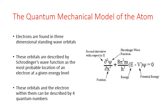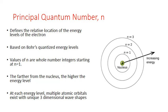They represent the most probable location of an electron at a given energy level. When Schrödinger's equation is solved for any electron in an atom, it allows us to define a set of quantum numbers that describe that electron orbital, or the most probable location of that electron. The first quantum number is known as the principal quantum number, given the variable n. It defines the overall energy level of the electron, based on the quantized energy levels of Bohr's model.